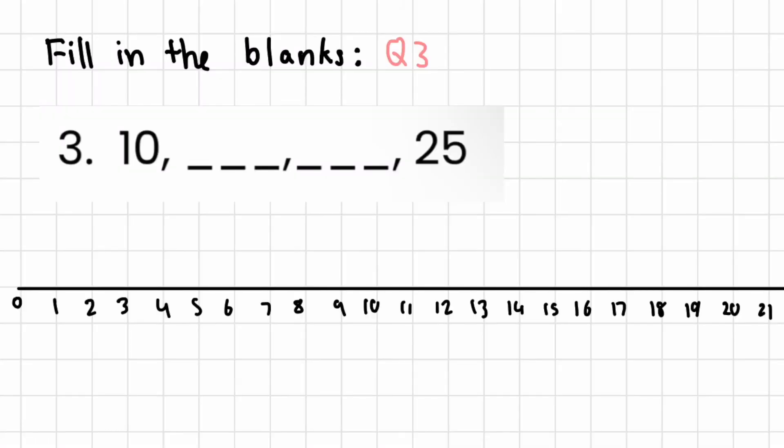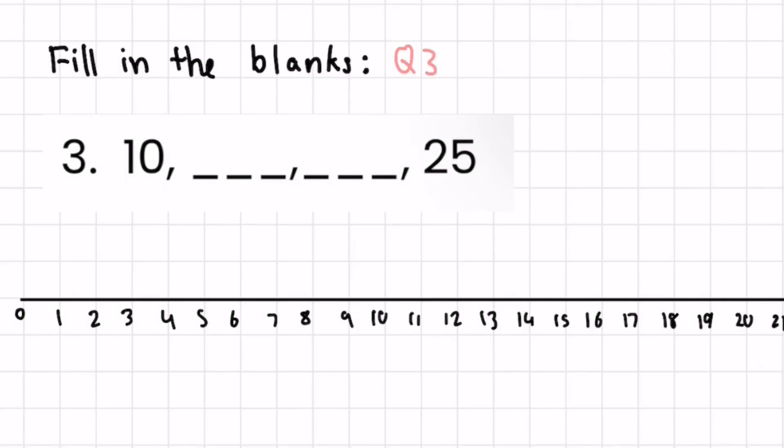Question three looks harder, but it's not that different from the previous ones. Let's start at ten on the number line. We can go five ahead and land on fifteen. Now, from fifteen itself, let's go five steps ahead again. We land on twenty. The final answer is ten, fifteen, twenty, twenty-five.